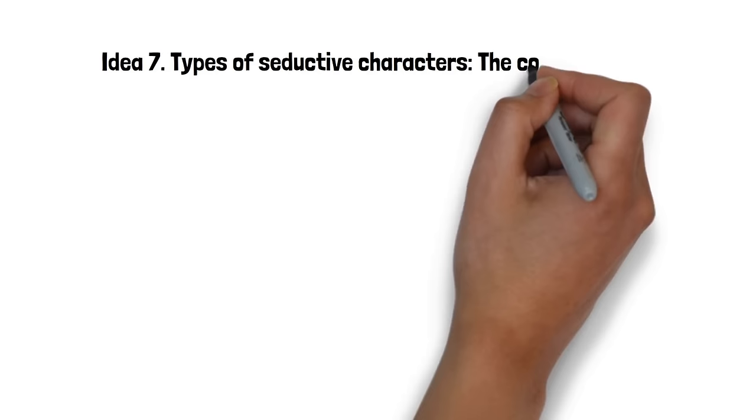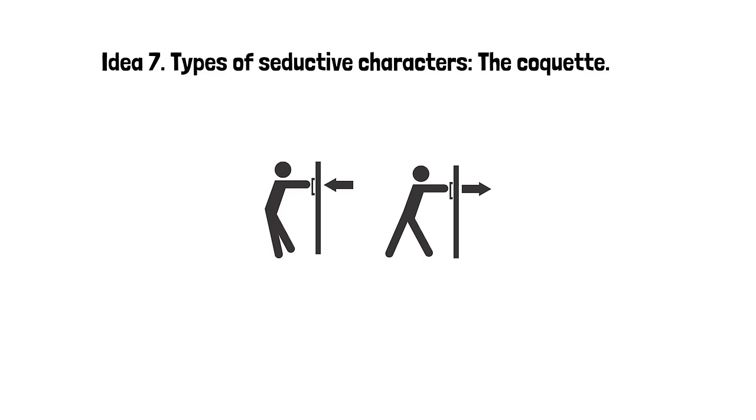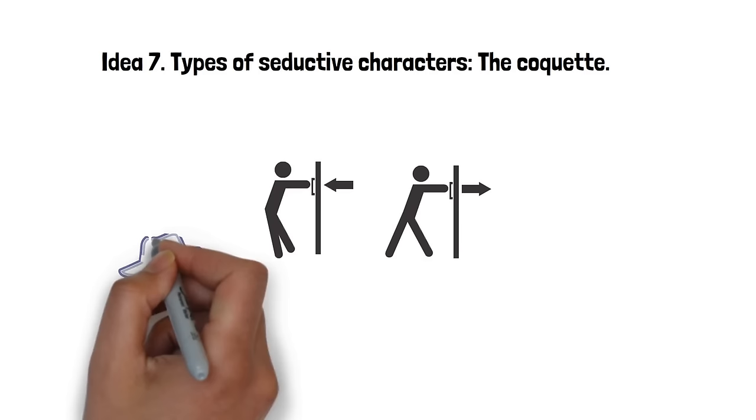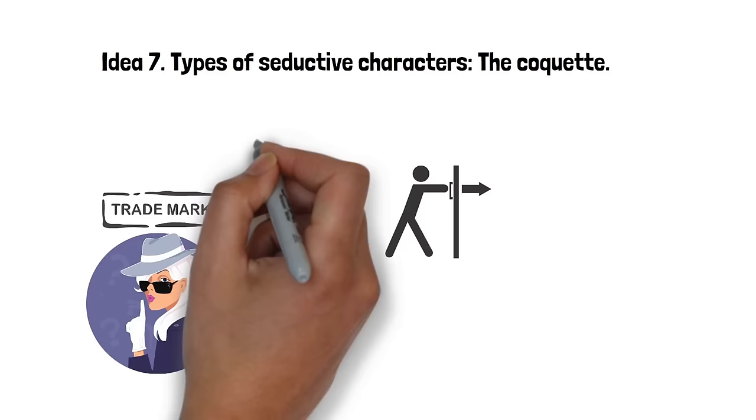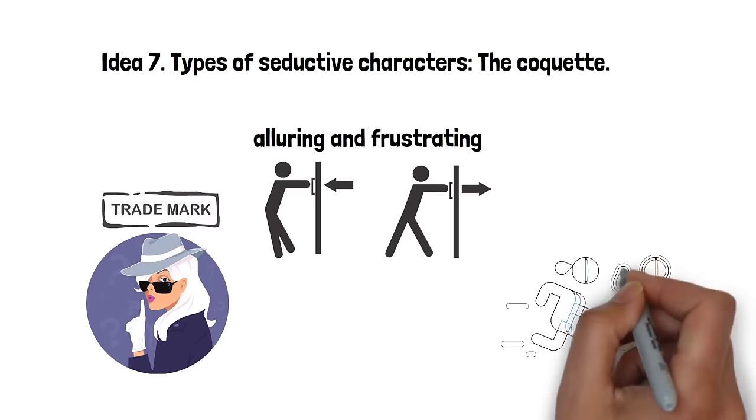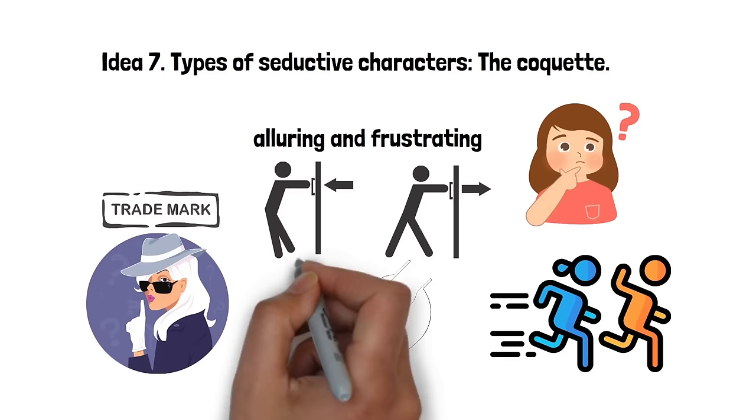Idea 7. Types of seductive characters. The coquette. The coquette is a master of push and pull, of drawing people in and then maintaining a tantalizing distance. They're experts at creating an air of mystery and intrigue, making people chase after them, and then never fully delivering what's expected. This flirtatious playfulness is their trademark. They can be both alluring and a little frustrating, but this is where their charm lies. The coquette knows that the thrill of the chase often surpasses the satisfaction of the catch. They keep their admirers guessing, in a state of constant desire. Their ability to remain elusive and always slightly out of reach is what makes the coquette so irresistible.